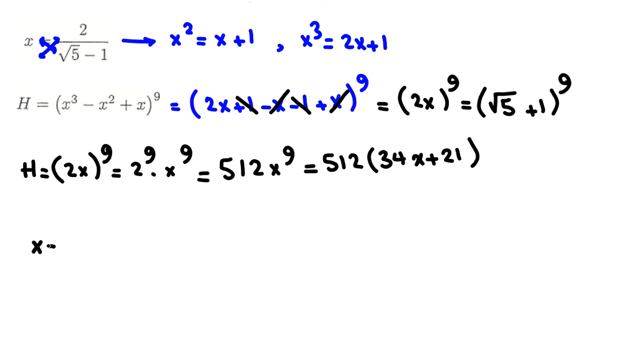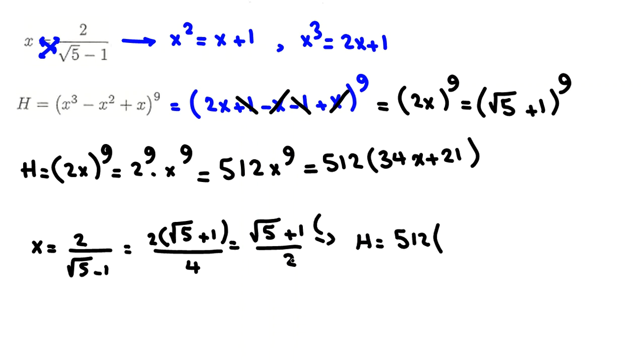And we set x equal to 2 root 5 minus 1. If we rationalize or get rid of root 5 in the denominator, it will be 2 root 5 plus 1. Multiply both numerator and denominator by this, and the denominator will be root 5 squared minus 1, which is 4. It was root 5 plus 1 over 2. So we can say H equal to what? 512, 34 times this root 5 plus 1 over 2, plus 21. And we can say 34, 2, 17. It will be 512, 17 root 5 plus 38.